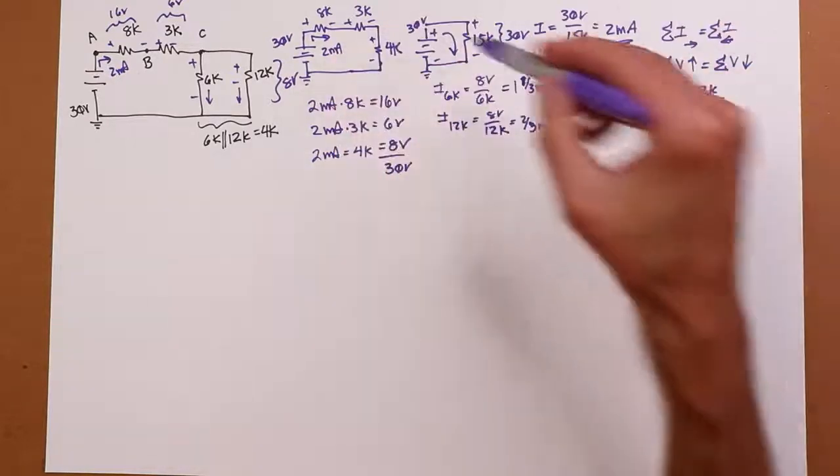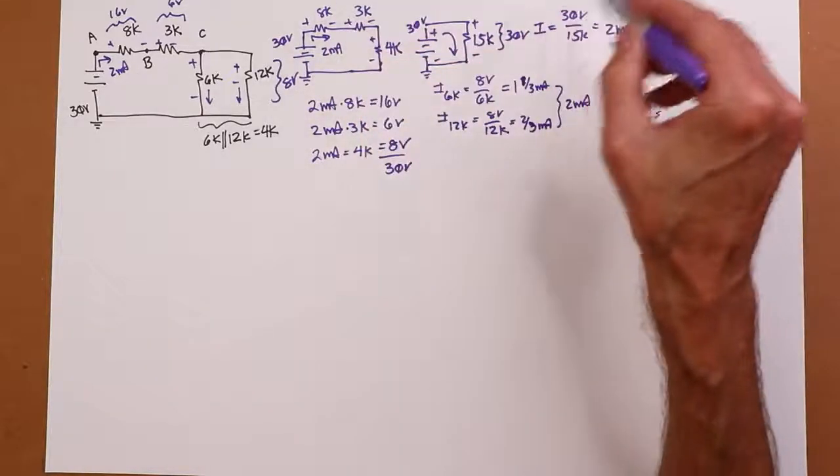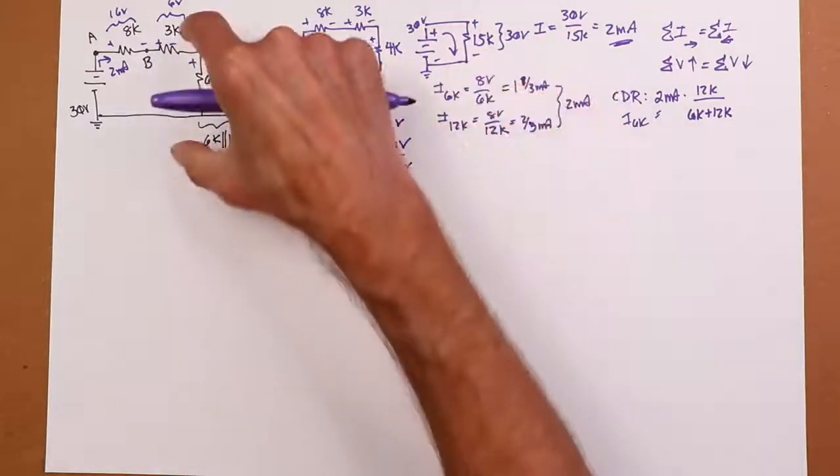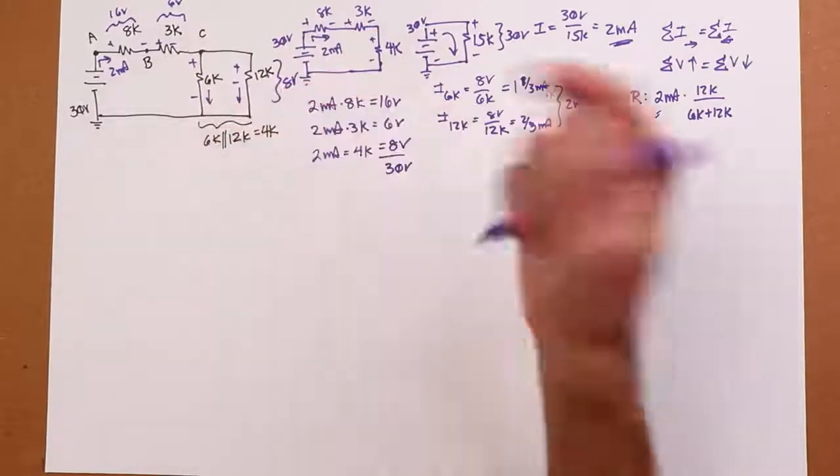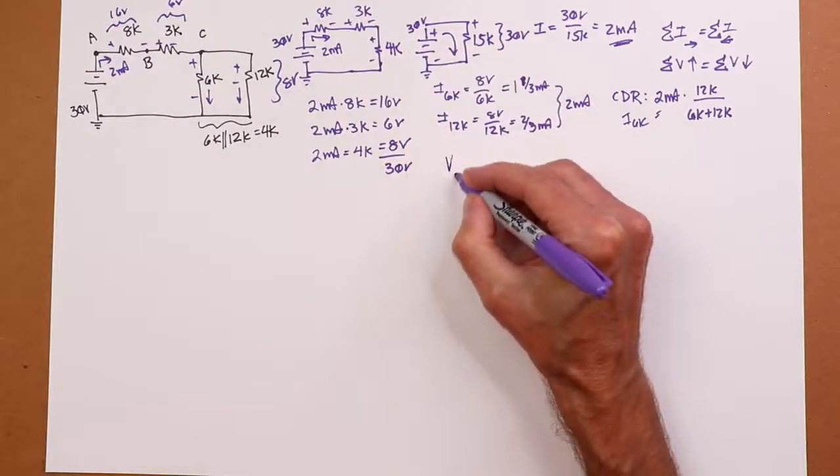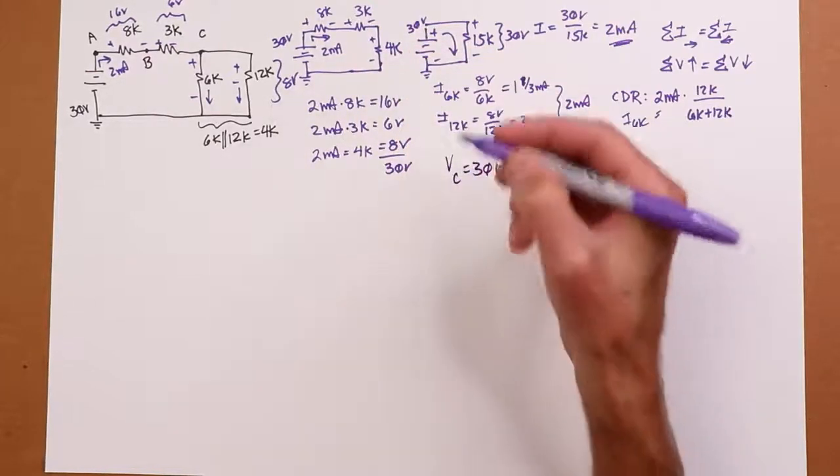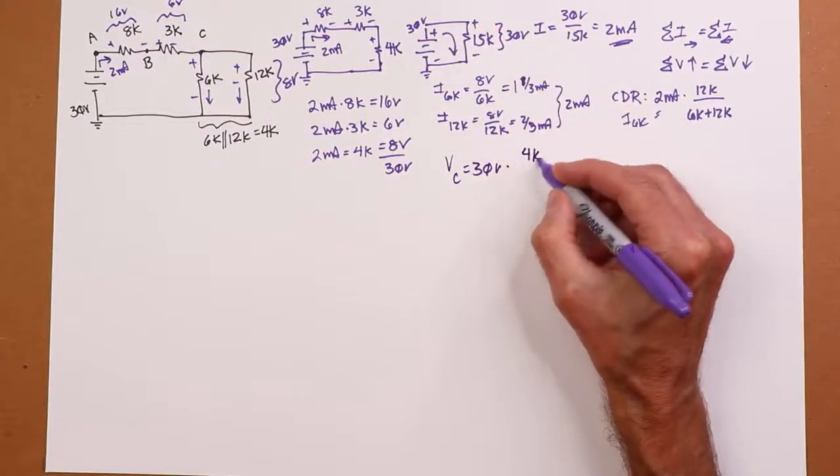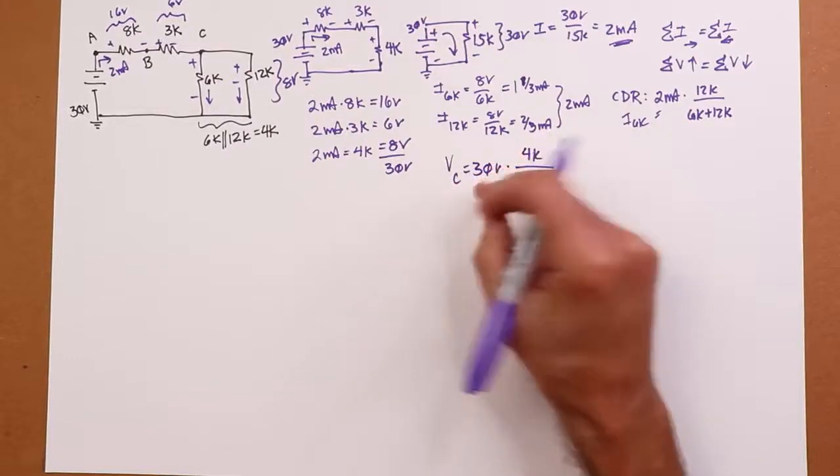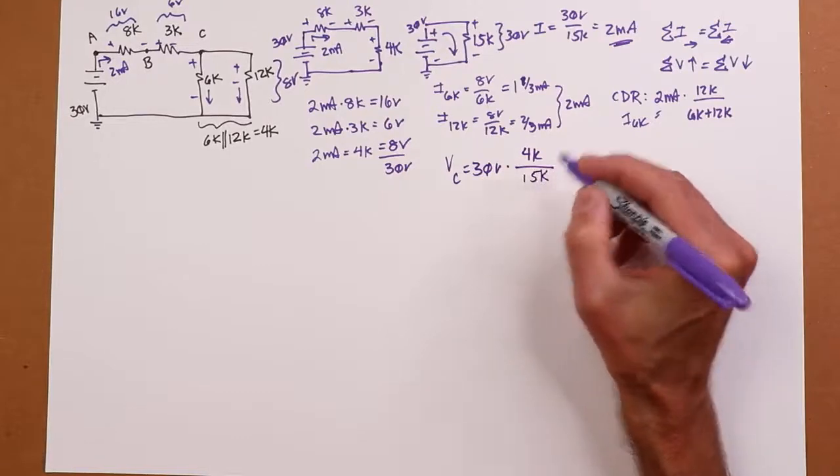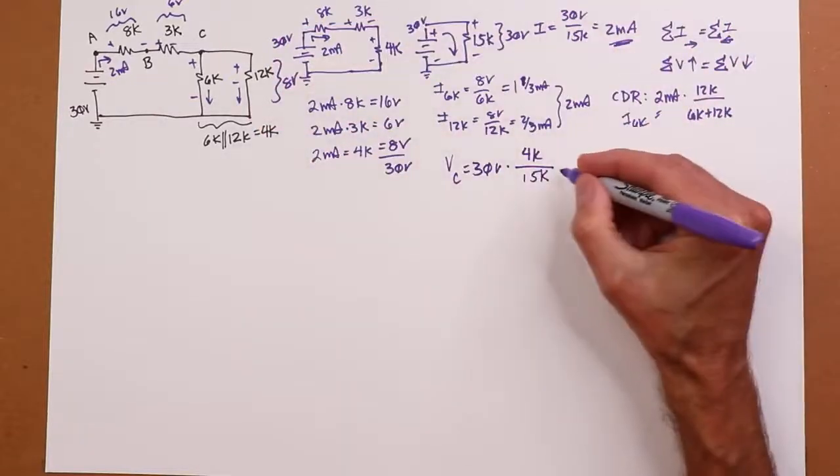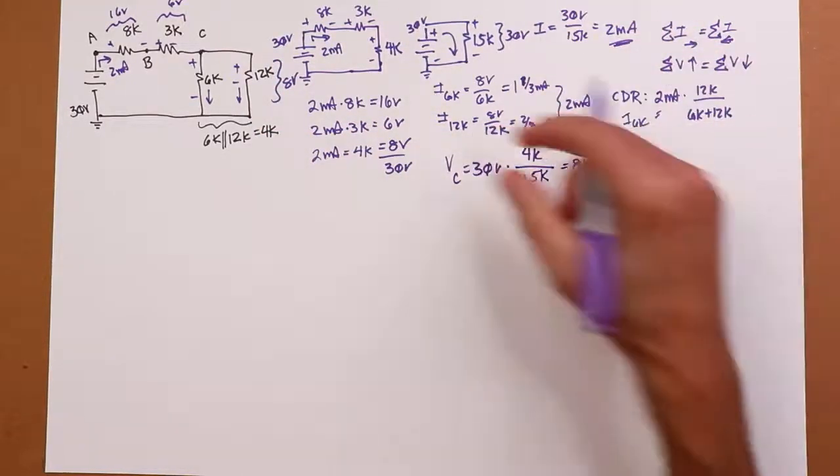You could also use a voltage divider rule. Instead of immediately going back and finding the current, like I did here, right? I said, oh, there's 30 volts, 15K, give me two mils. You could just do a voltage divider rule. You know, if the question was, what's VC? What's the voltage from C to ground? You could just say, take my source voltage, multiply by the resistor I'm interested in, which is the 4K, and then divide by the total value of resistors that that voltage is impressed upon. In other words, 15K. And that will just give you the appropriate value. 4 fifteenths of 30 volts is 8 volts.